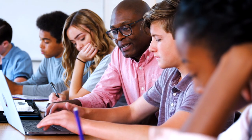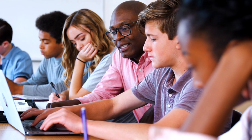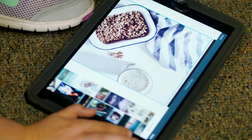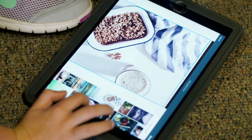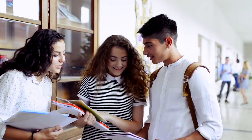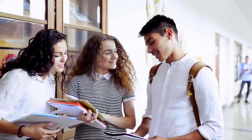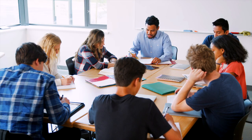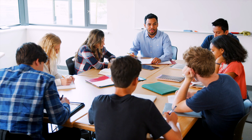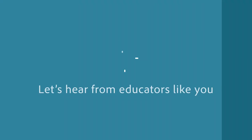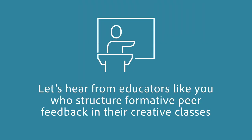Think about the projects or activities you have planned to address your class learning objectives. Then ask yourself: when and how often will students benefit from peer feedback? This will help you plan backwards so that your students get the peer feedback they need.